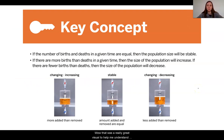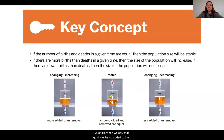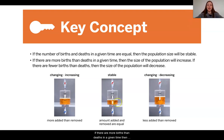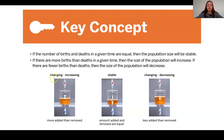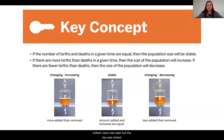That was a really great visual to help me understand why populations can stay the same even when births and deaths are occurring. If the number of births and deaths in a given time are equal, then the population will be stable — just like when liquid was being added to the container and being taken away at the same time. So stability or stable populations doesn't mean nothing is happening; it means that the births and the deaths are equal. If there are more births than deaths in a given time, then the size of the population will increase, just like when water was being added into the tank but the bottom valve was closed.